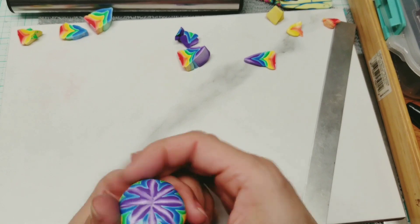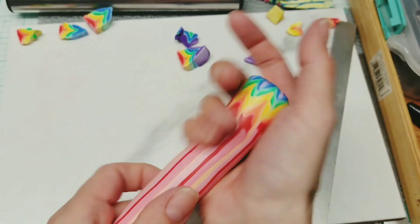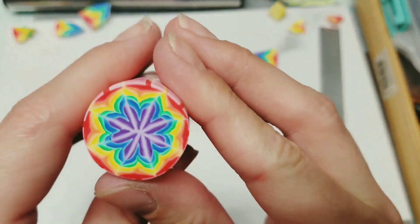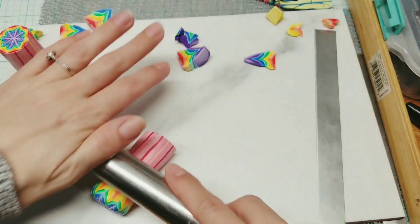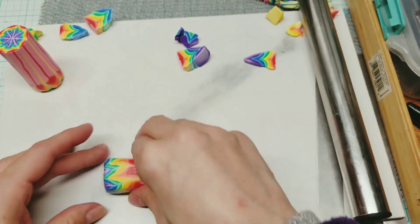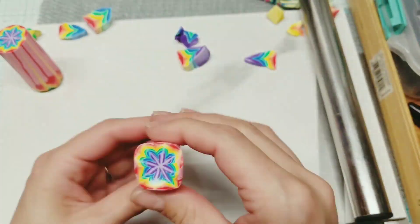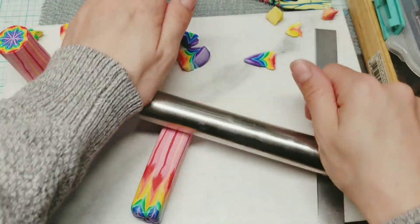I'm just reducing again with my pointer and my thumb like we've done. Starting in the middle, working up to the ends. So I'm going to save a chunk of this and I'm going to play with the other chunk. I'm going to reduce it as a square. Just like I'm saying all those individual pieces, you could have made them square. You can force it to do what you want it to do.